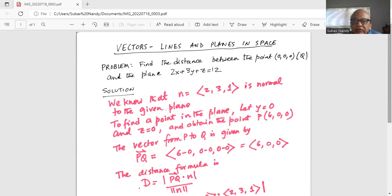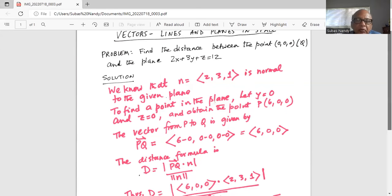To find the distance between the point and the plane, the formula is absolute value of the dot product of vector PQ dot n,